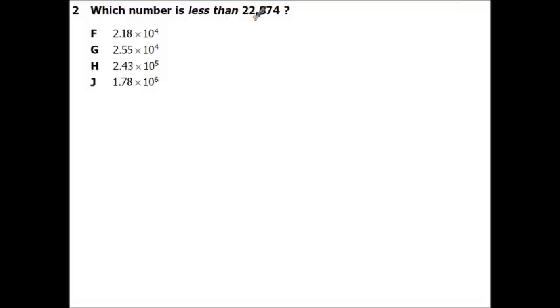Alright, which number is less than 22,874? So we're just going to convert these to what they need to be. So if we move this one from scientific notation, you just move the decimal however many times it says in the exponent. If it's positive, you're going right. If it's negative, you're going left. So this is a 4, so we're going 4 to the right: 1, 2, 3, 4. So since there's 2 nothings there, it's going to be 21,800.